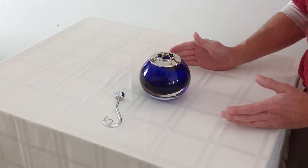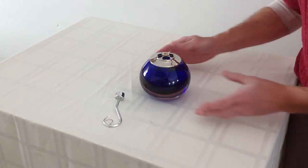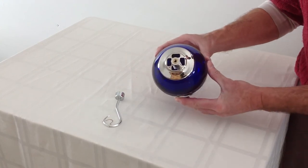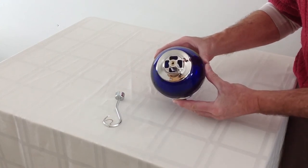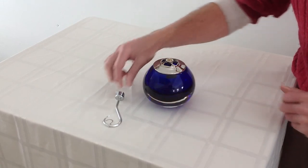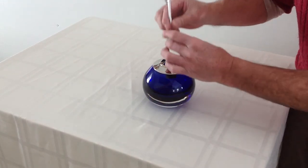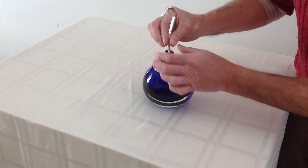Now when your wine chime arrives at your door, it will be assembled to this point. This is what will come out of the package. All you'll need to do is thread on the mast. It goes right on here.